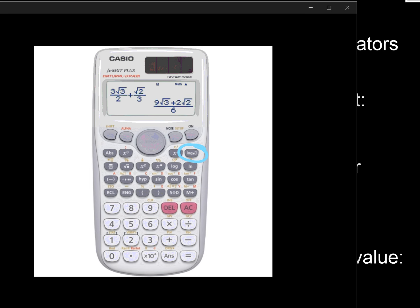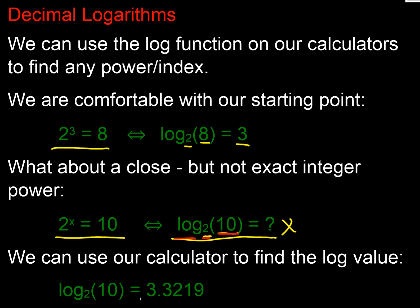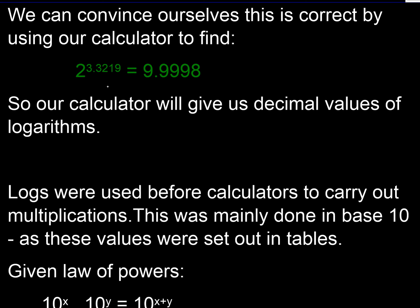Here's our calculator. There's an interesting button — it's got 'log' with a little dot and a big dot. We put our base value a in the little dot and n in the big square, and the calculator gives us the answer. Log base 2 of 10 is 3.3219 (rounded to four decimal places). We can verify this: putting 2 to the power 3.3219 into our calculator gives 9.9998, which confirms it's correct.